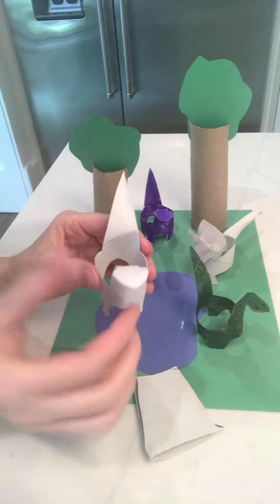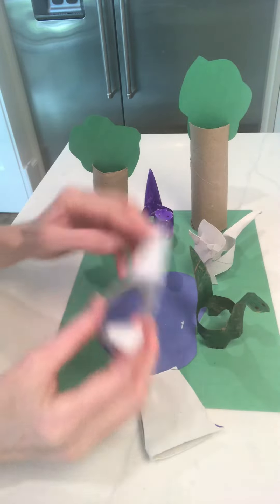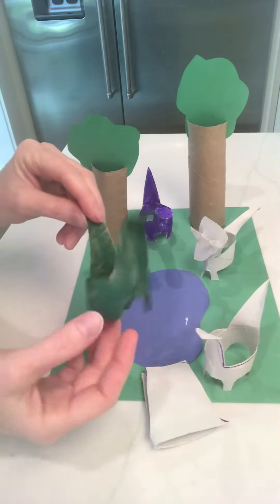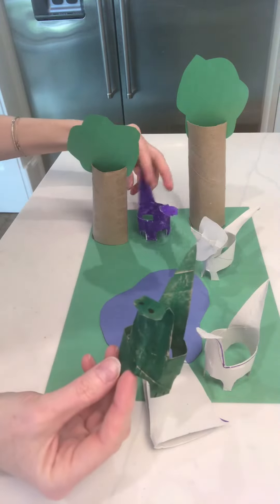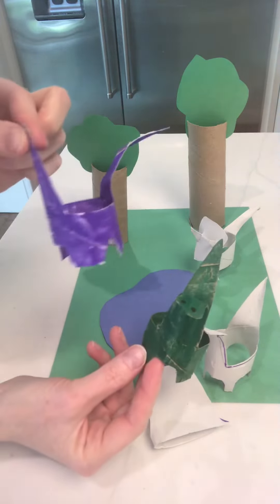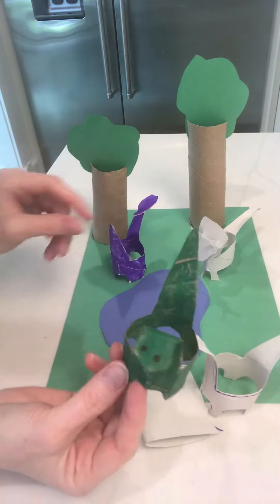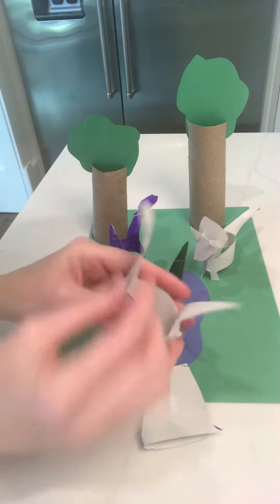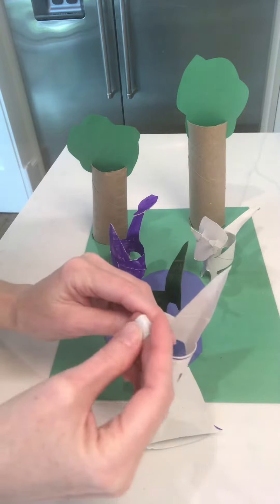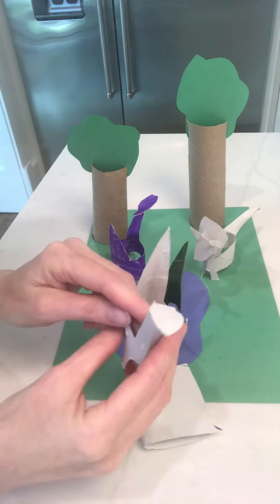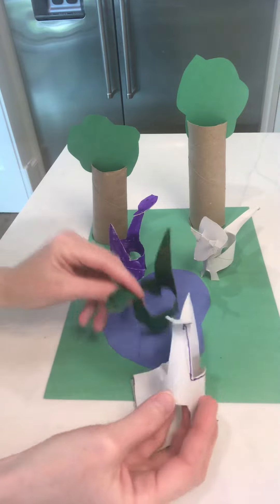So from here you could paint your dinosaur. I used a marker on this green dinosaur and on the purple one just to show you in case you don't have paints at home. But what you would do is you can lay it flat and color it, or you can just paint it after you've formed it and then you can put the little eyes.